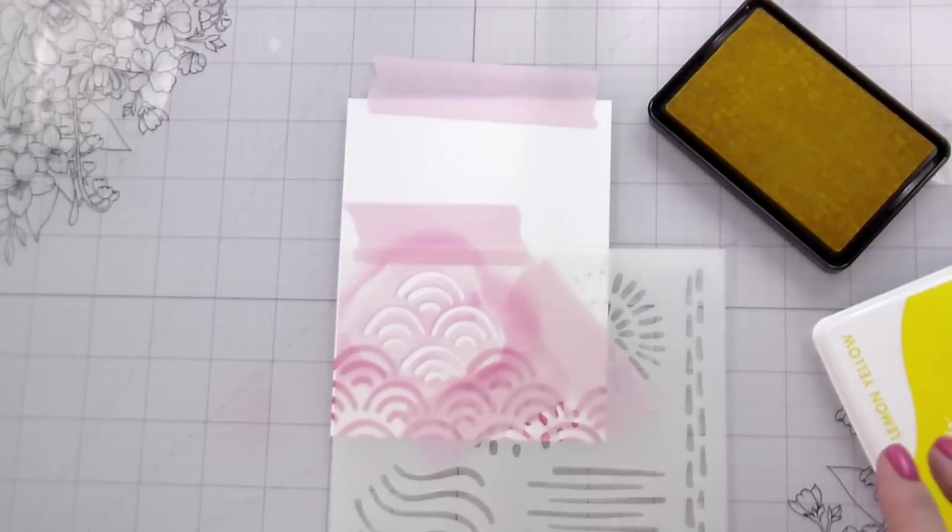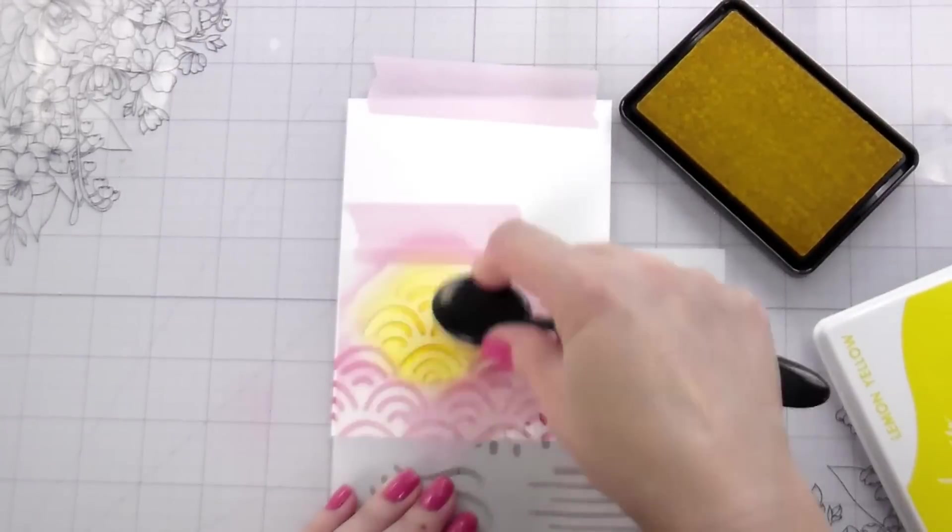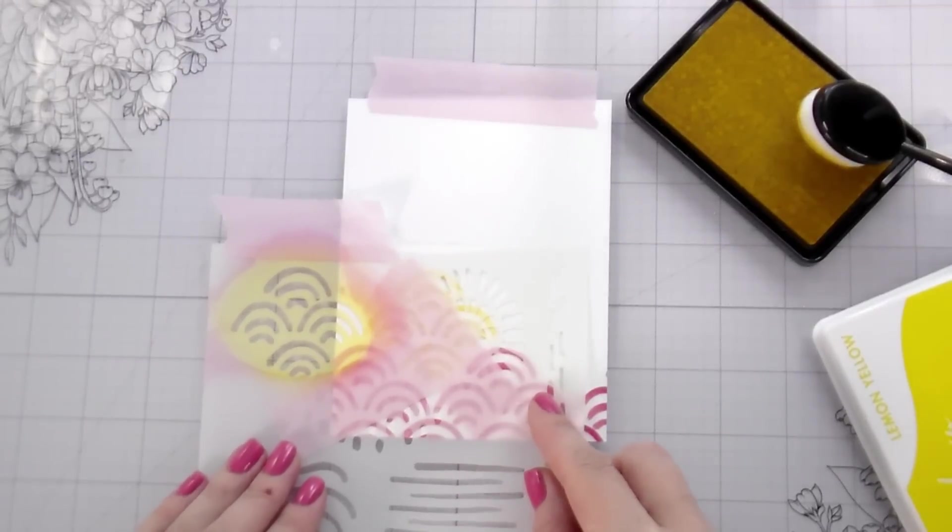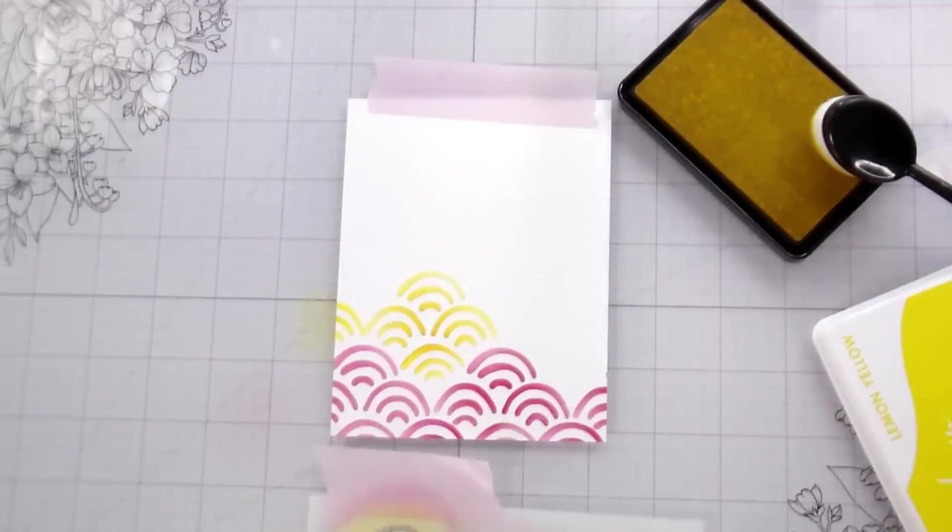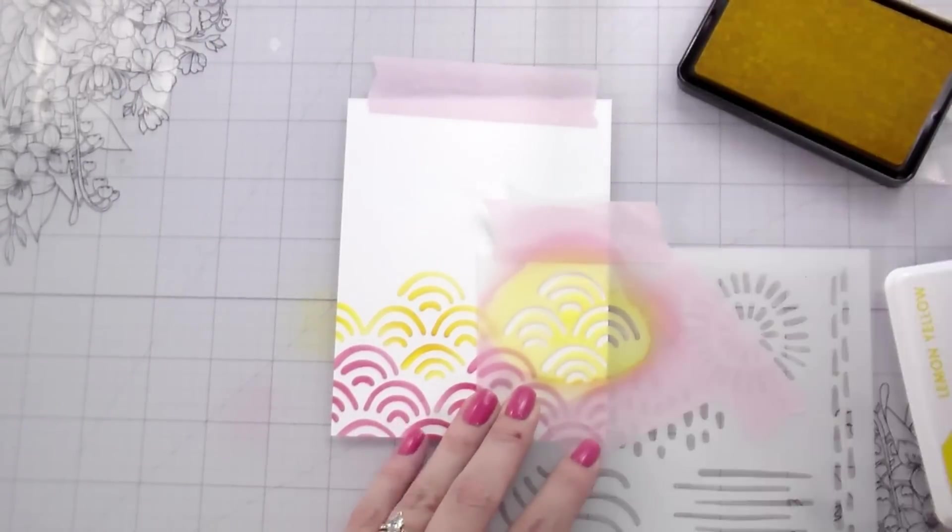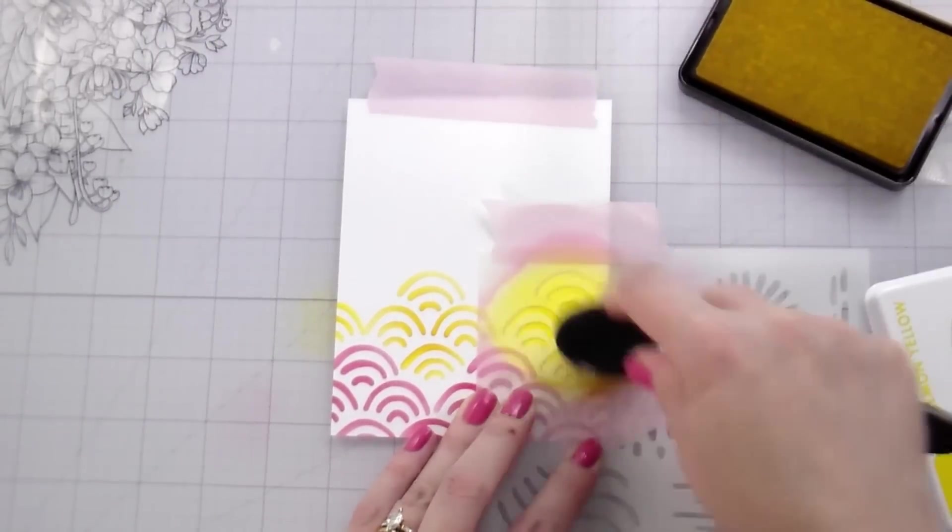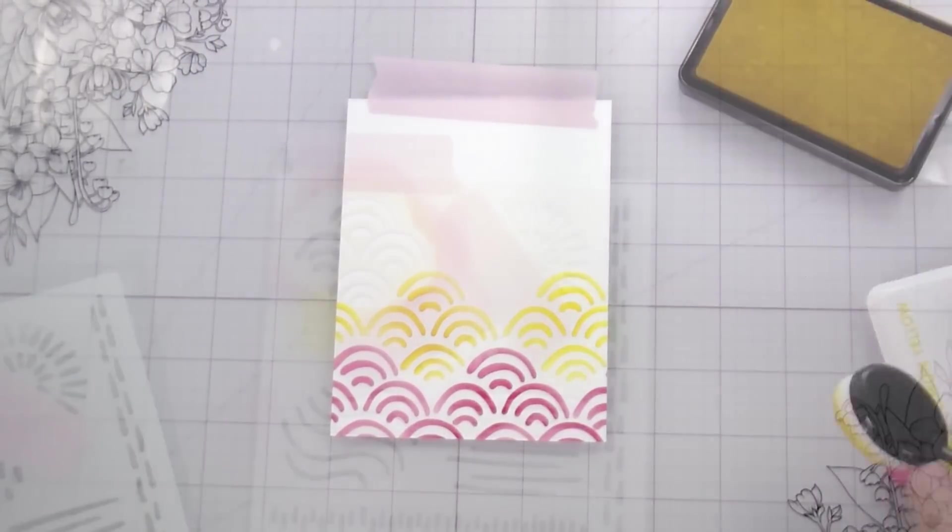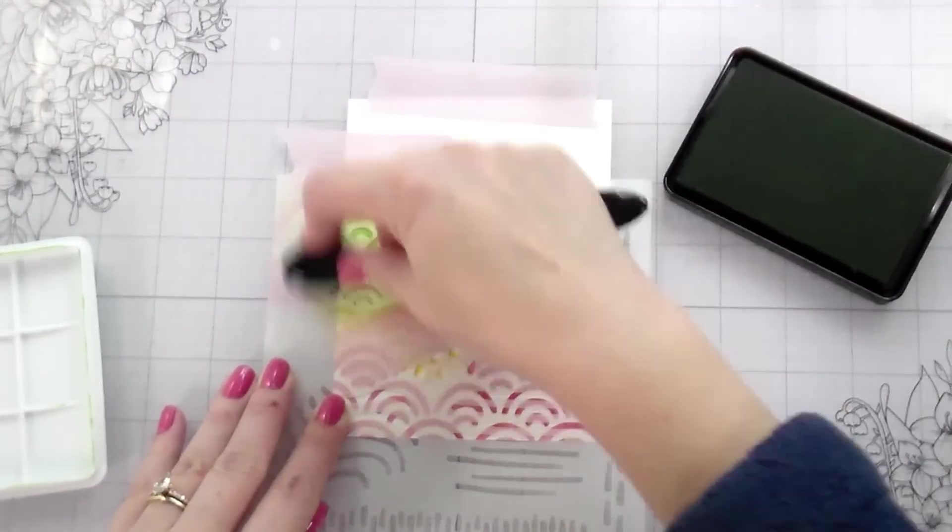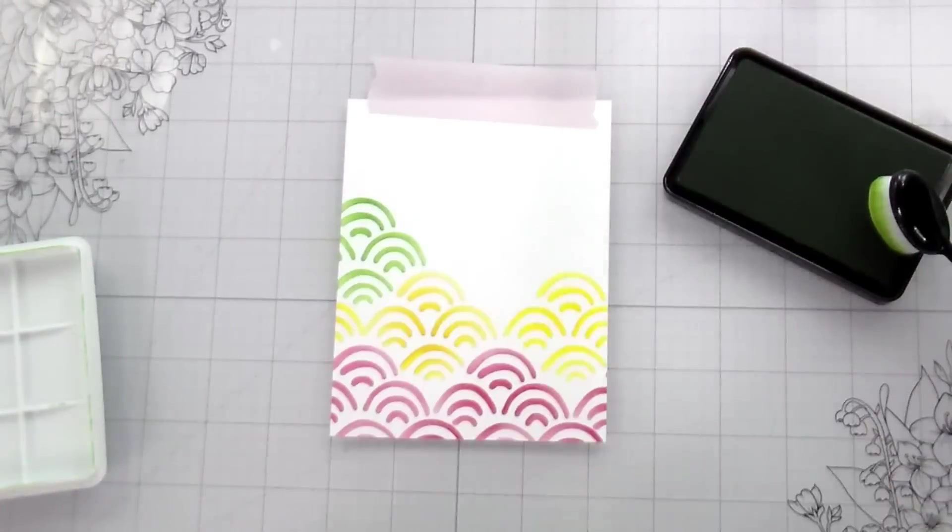So I'm just going to very quickly move through these and I am cleaning the stencil in between. It does stain a little bit. It does stain the stencils a little bit, but I am cleaning them off so that I am not contaminating my brushes or my ink pads or honestly the color on my card. So I just moved up pink, yellow, green, teal, and then blue.